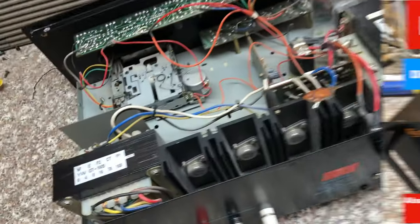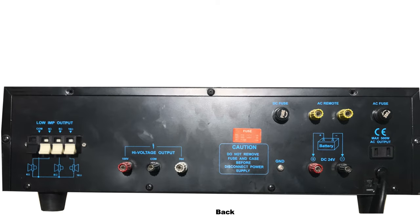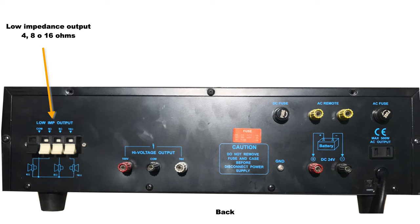Here is the inside of the amplifier. As you can see, it has two big transformers. Here you can see the front and the back. In the back we have normal speaker or low impedance speaker outputs like the ones used in home or car, and also a high voltage output.